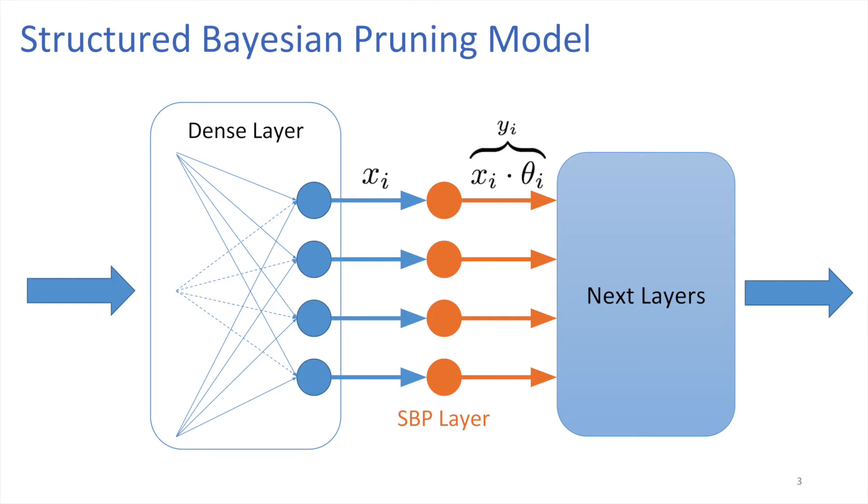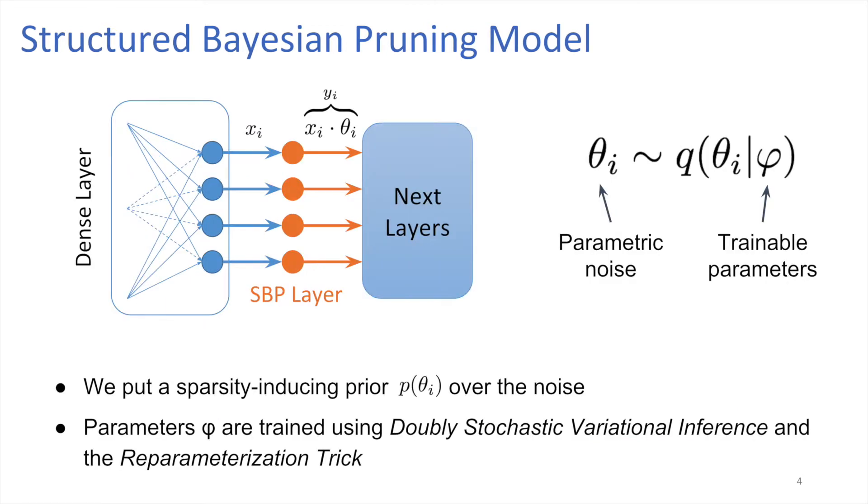Consider a dense layer as an example. To remove its neurons, we multiply its outputs by noisy variables θ. If some θs have collapsed to zero, we can permanently remove corresponding neurons. In our model, this multiplicative noise is parametric, and the parameters phi of its distribution are trainable.